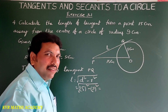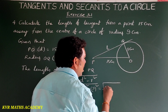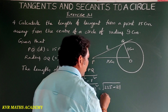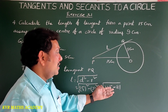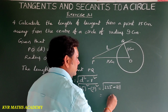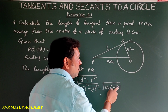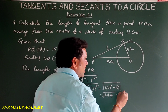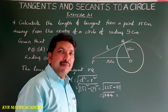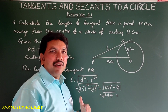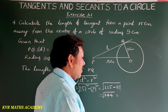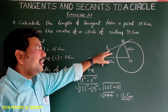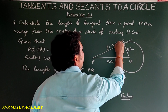15 squared is 225, and 9 squared is 81. Root of 225 minus 81 equals root of 144, which is plus or minus 12. Since we need a positive measure, the length of the tangent L is equal to 12 centimeters.